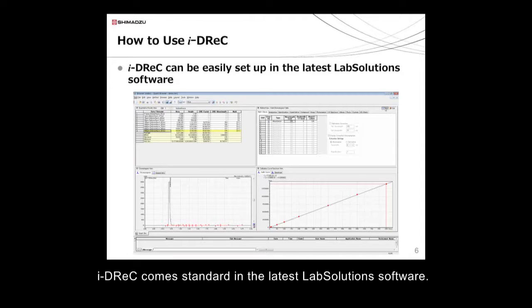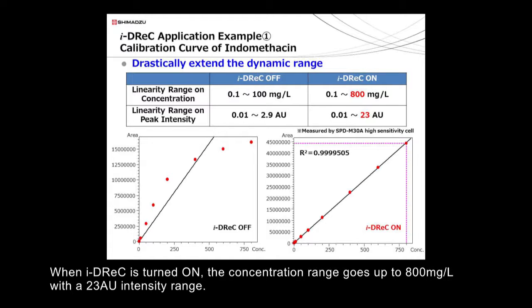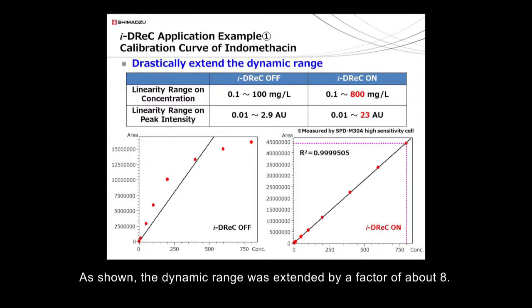iDREC comes standard in the latest LabSolutions software. In this example involving indomethacin, the linearity range is up to a 100 mg per liter concentration and a 2.9 AU intensity range without iDREC. When iDREC is turned on, the concentration range goes up to 800 mg per liter with a 23 AU intensity range. As shown, the dynamic range was extended by a factor of about 8.